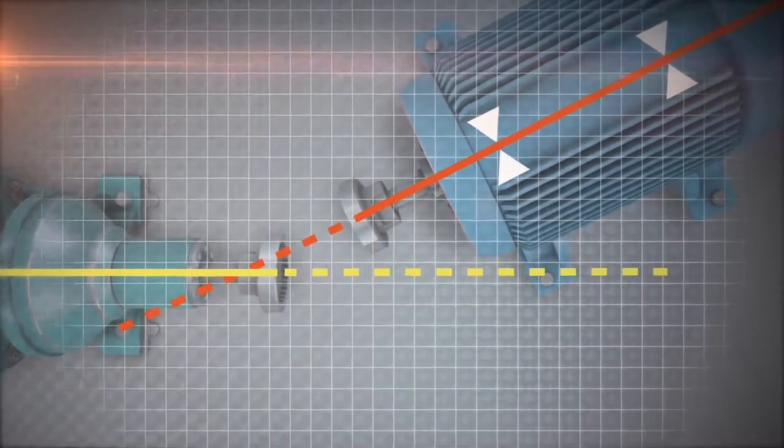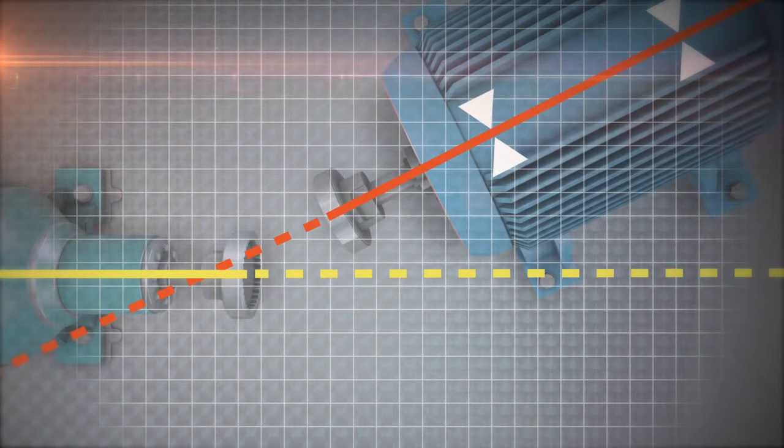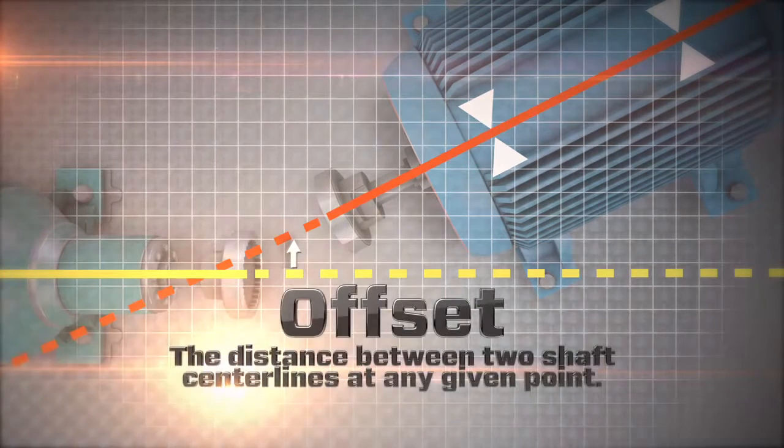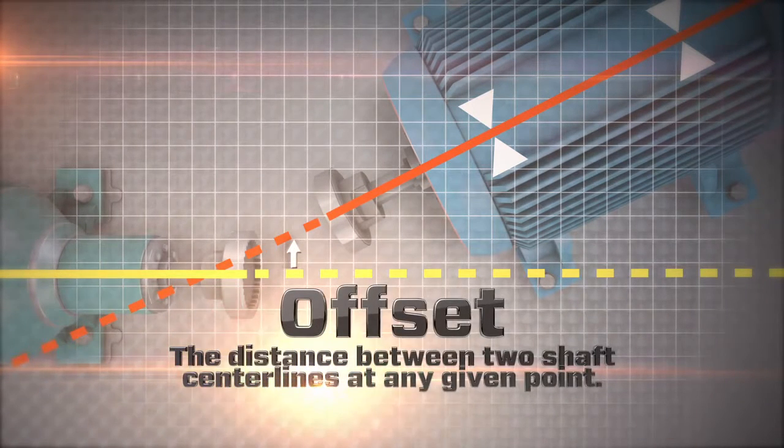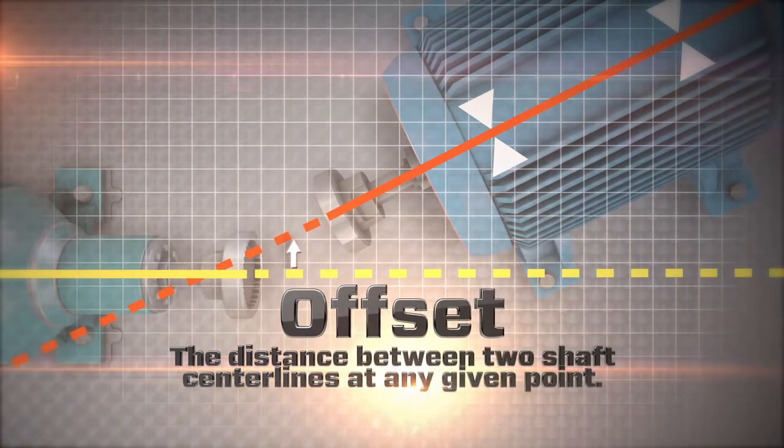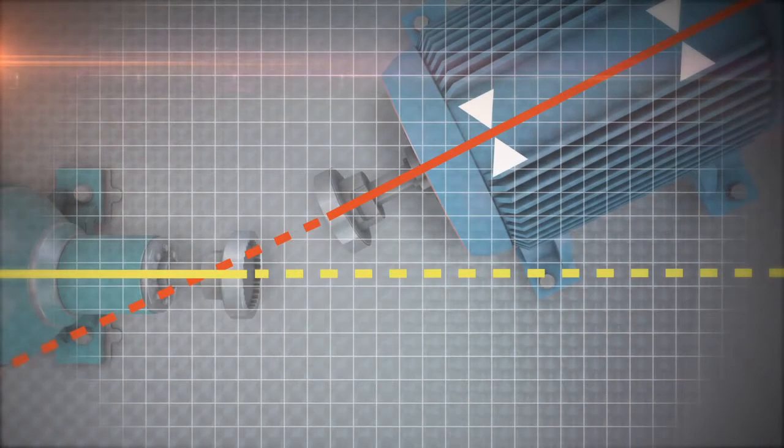At the moment, the movable machine is misaligned. As you can see, there is an offset at the coupling. Offset is the distance between two lines at any given point, in this case the coupling center.